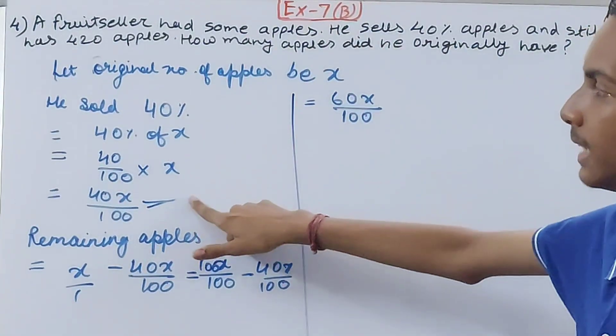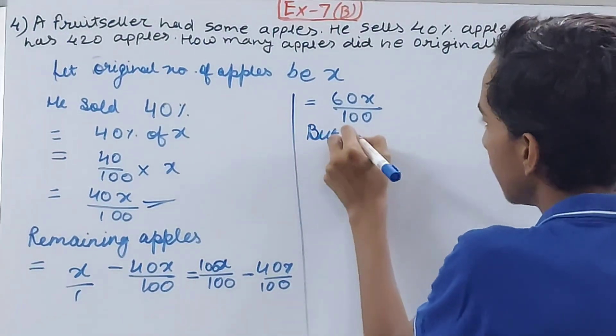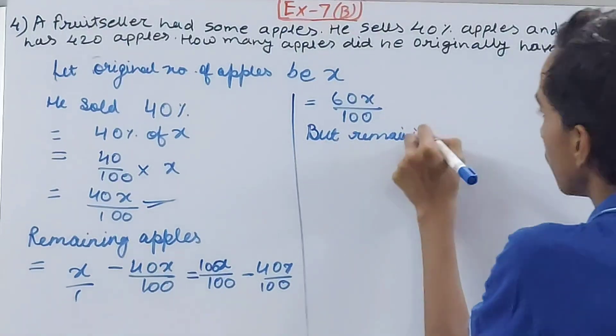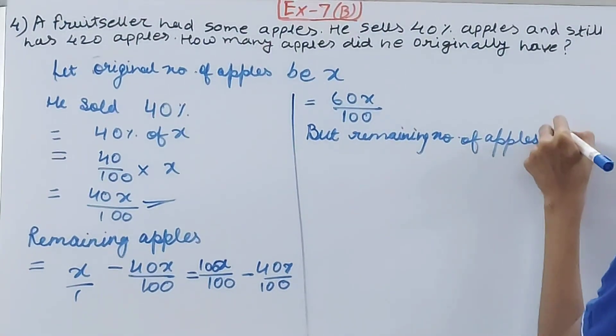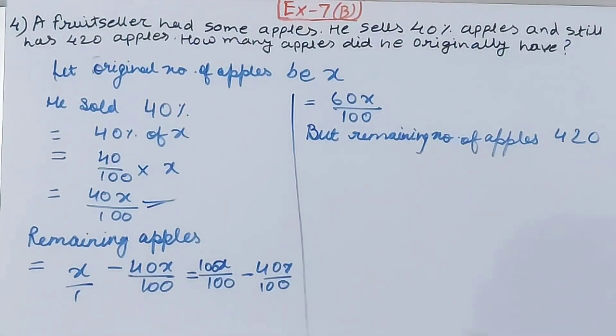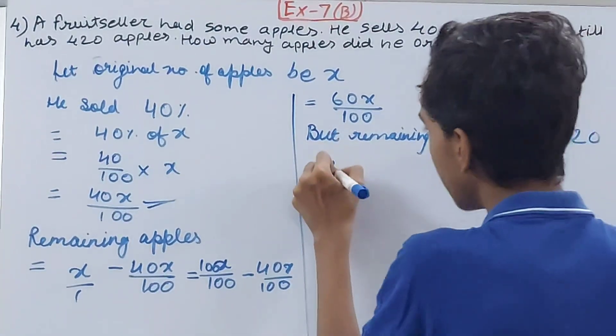But we know that remaining number of apples is 420, right? After selling, he is left with 420 apples. So we know this. Then why have we calculated this? So that we can put this in equation form.